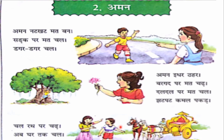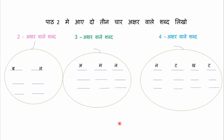So children, this is Part Aman. You have to practice lesson reading. And after this, you have homework. In Part 2, you have to write 2, 3, and 4 letter words — akshar means letters, waale shabd means words. You have to write 2, 3, and 4 letter words from Lesson 2. Examples are also given here.